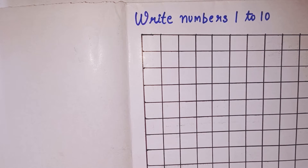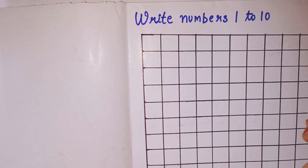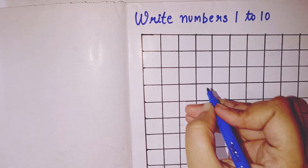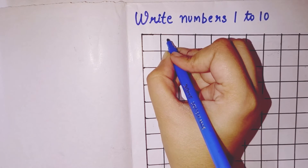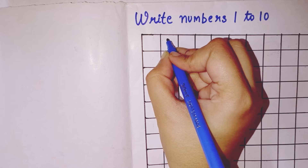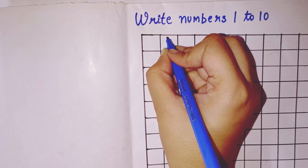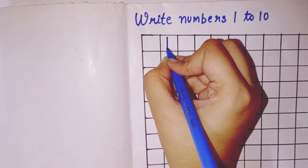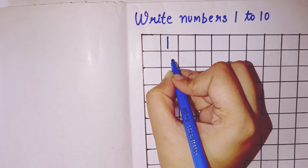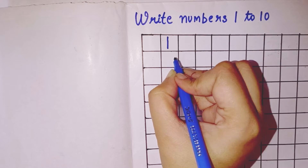The first number we will learn today is number 1. So how we will write number 1? For number 1, we have to draw a standing line. This makes number 1.